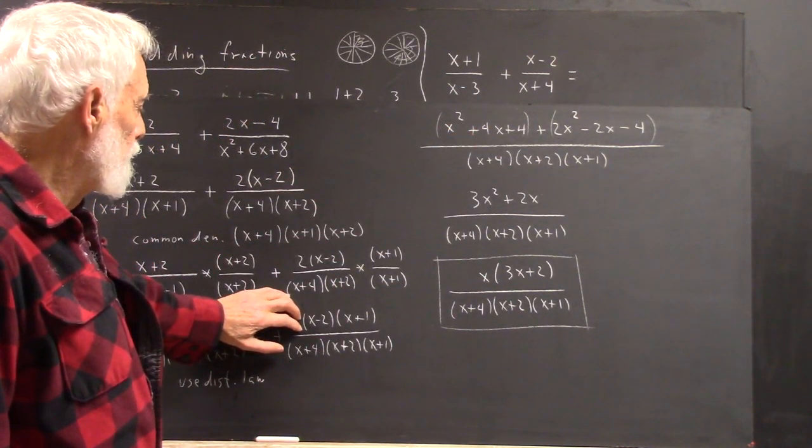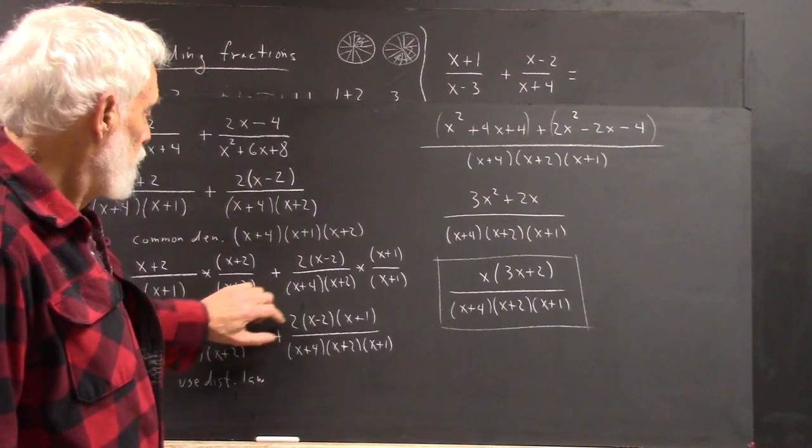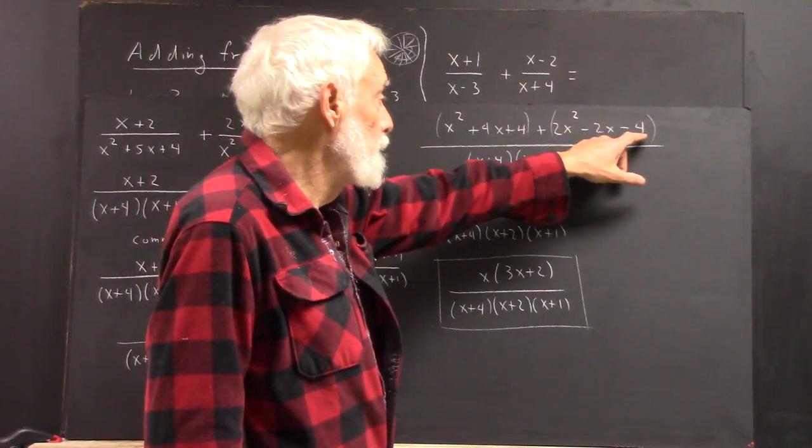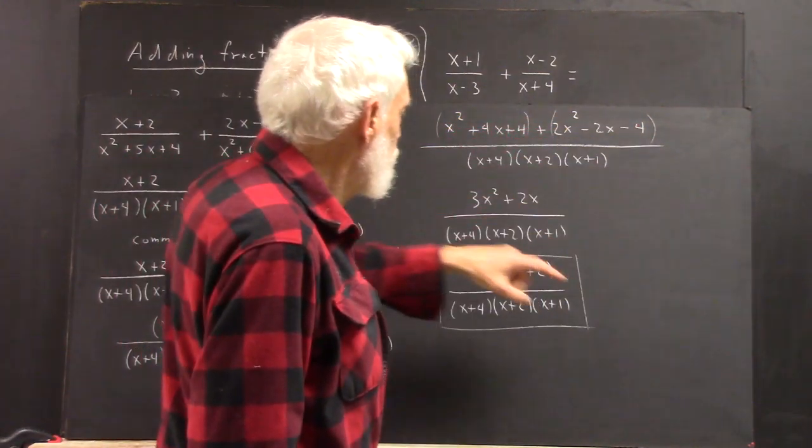Now, I didn't want to get into all the detail we've illustrated using the distributive law a couple times, and of course we're going to emphasize that. But if you use the distributive law here, you get x squared plus 4x plus 4, which is here.